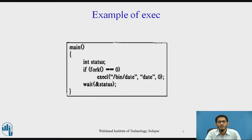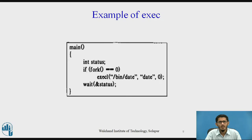Next, we see an example of the exec system call. Here it creates a child process that invokes the exec system call. After the parent and child processes return from fork, they execute independent copies of the program. When the child process is about to invoke the exec call, its text region consists of the instructions for the program, its data region consists of the strings '/bin/date' and 'date', and its stack contains the stack frames pushed to get to the exec call. The kernel finds the file '/bin/date' in the file system, finds that all users can execute it, and determines it is an executable load module.